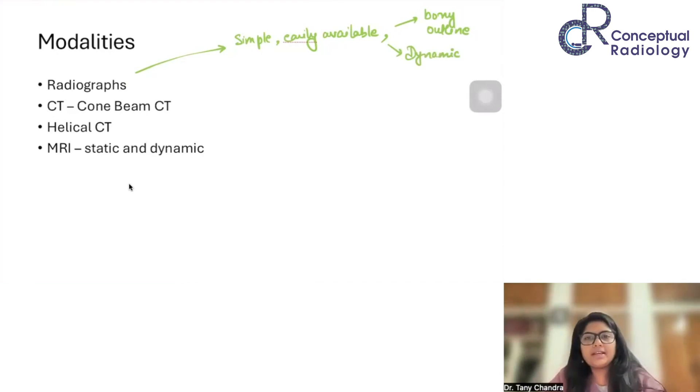We can do an x-ray with the TMJ in a certain position, which would mean either a closed jaw or an open jaw. We will talk about its biomechanics in a while. But again, we must remember that these use ionizing radiations.